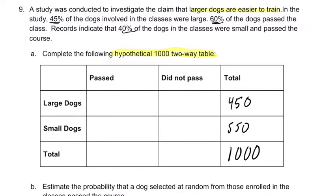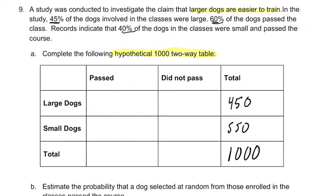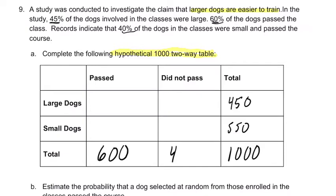60% of the dogs passed the class. Here's our passed column, and the total passed would go in this spot. So 60% passed means 600 passed, and 400 did not — poor dogs.